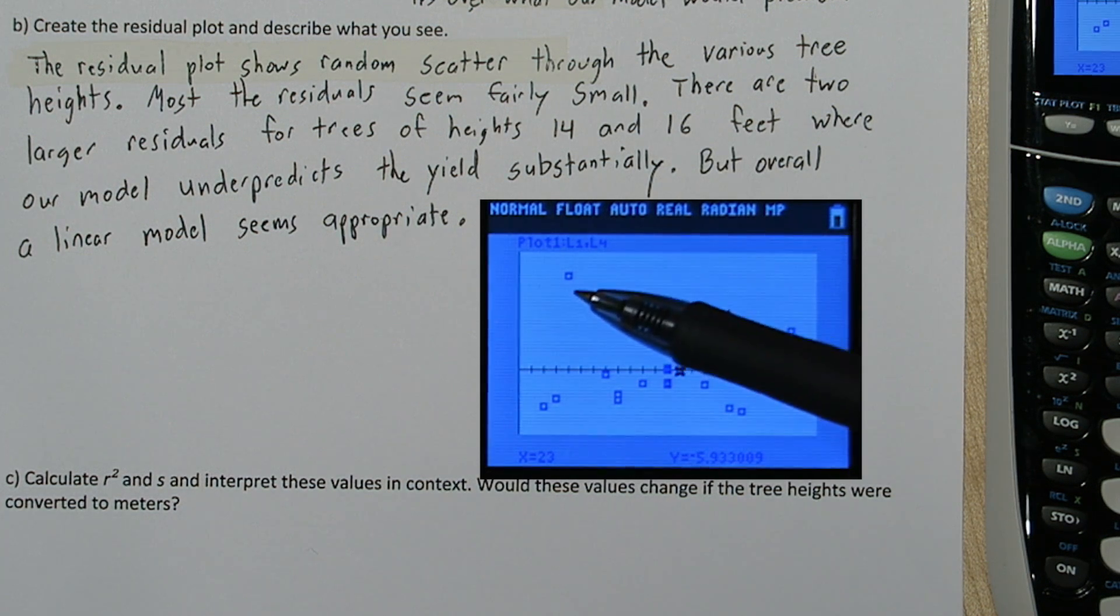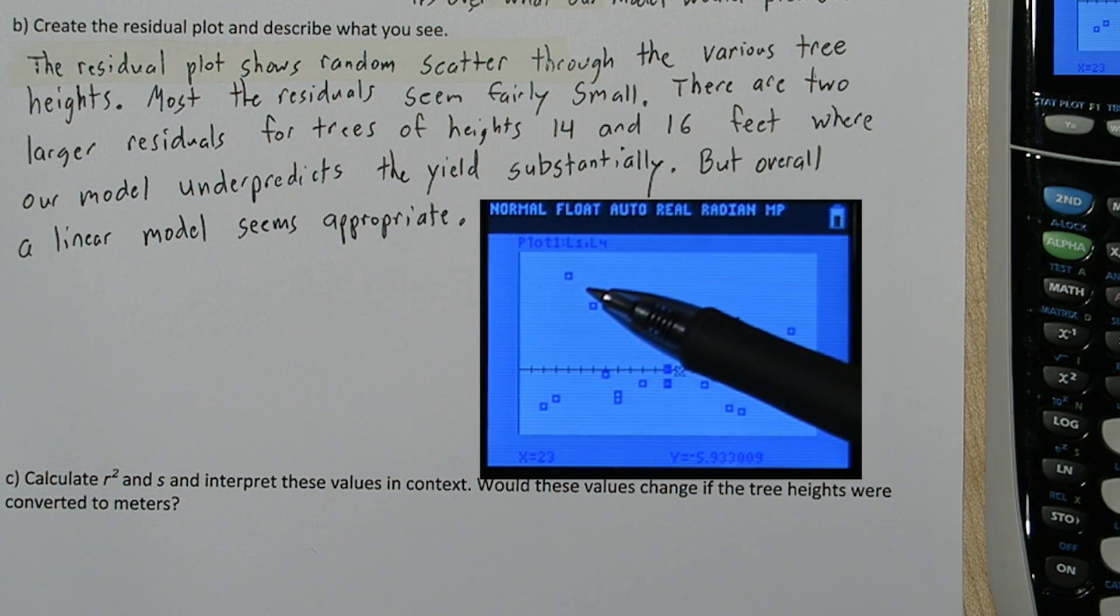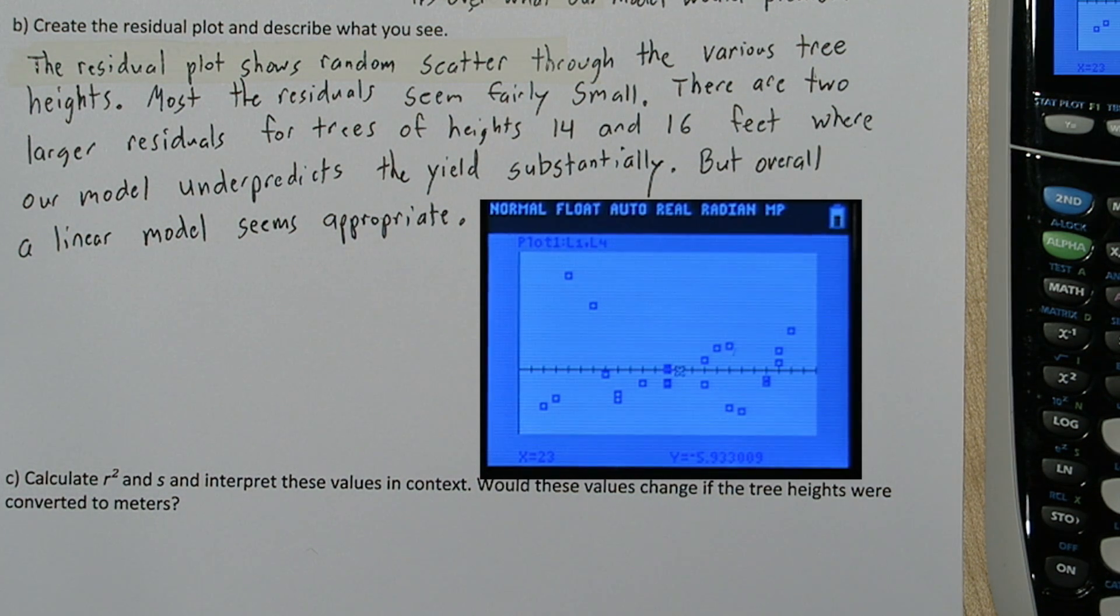I am going to talk about these two values. These are from trees of heights 14 and 16, and since they're large positive residuals, it means our model under-predicted their yield substantially. But overall, a linear model seems quite appropriate.